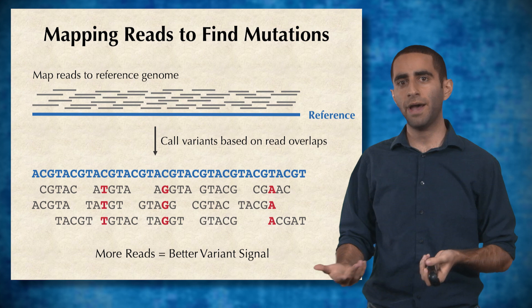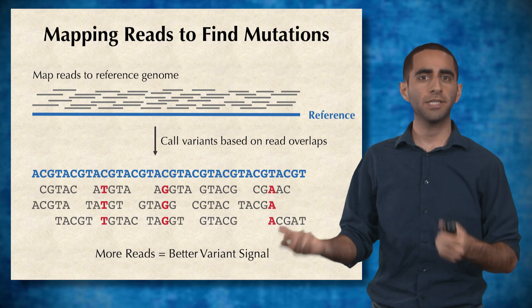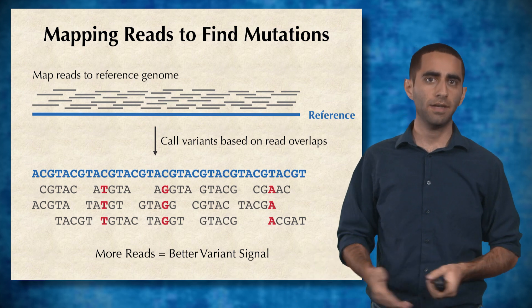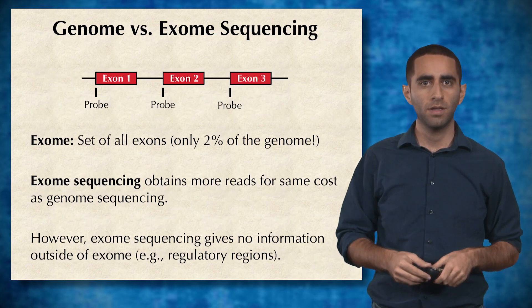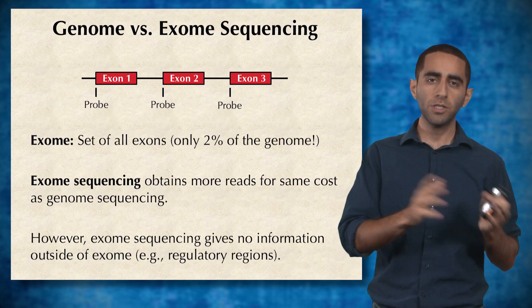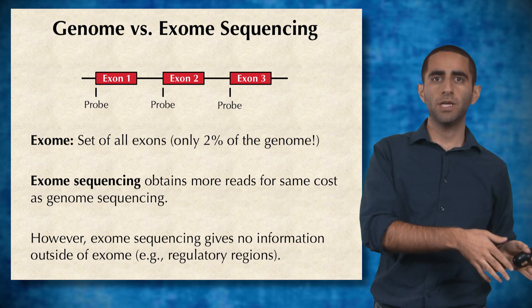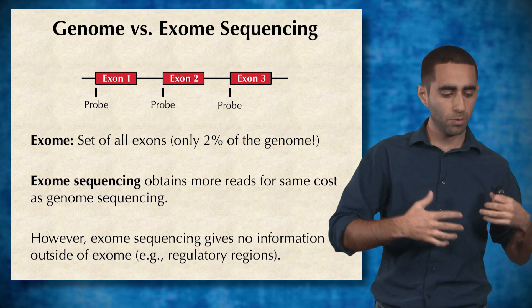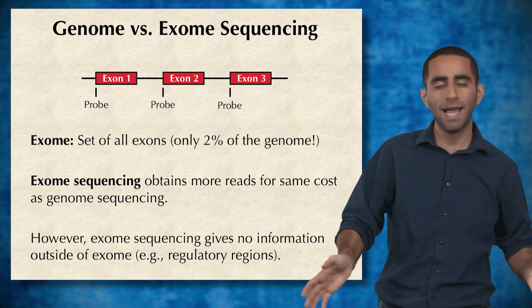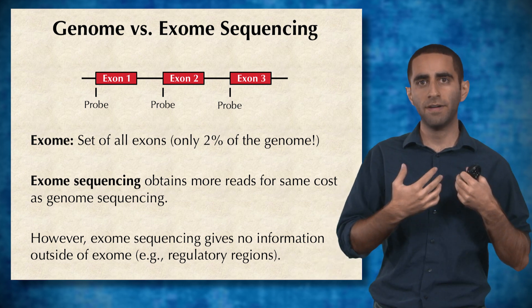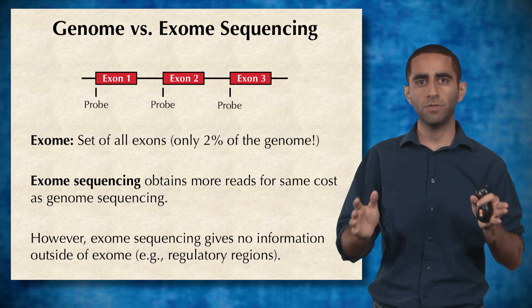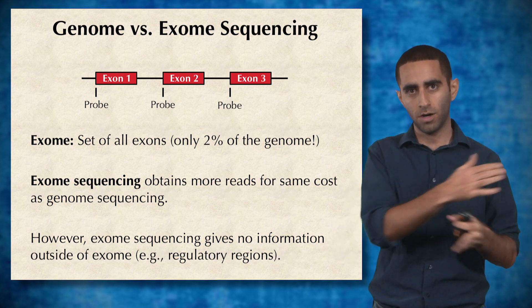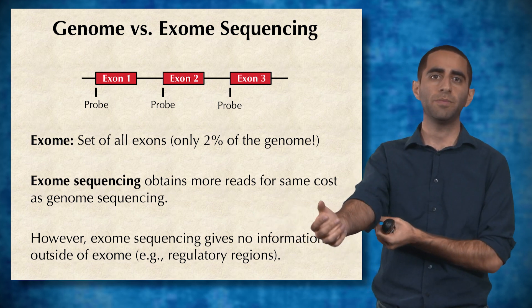The more reads we have, the better signal we can get. This was whole genome sequencing, where we sequence the entire genome to find all possible variants throughout the genome.